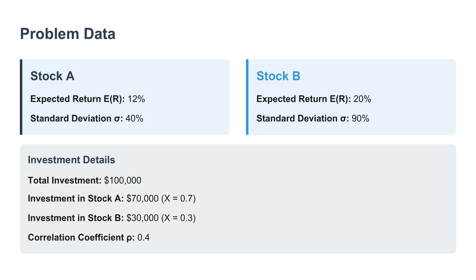Let's start with those building blocks. We have to define our portfolio. The sources give us two make-believe investments, just called asset A and asset B. For any asset, you need two key numbers. The first is expected return — think of it as the anticipated average return you'd get over time. The second is standard deviation, often shown with the Greek letter sigma, and it's basically the universal way to quantify risk. It tells you how much the actual return tends to bounce around that expected average — so it's a measure of volatility. Asset A is our safer bet: it has an expected return E of R-A of 12%, and its risk, sigma A, is 40%.